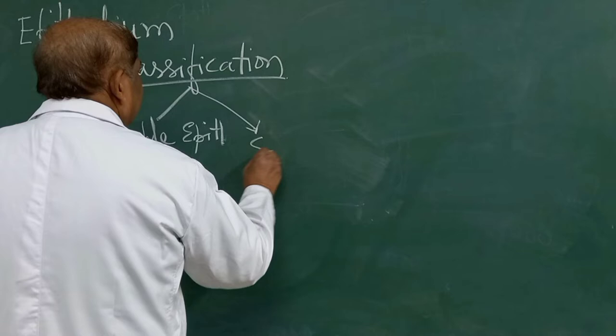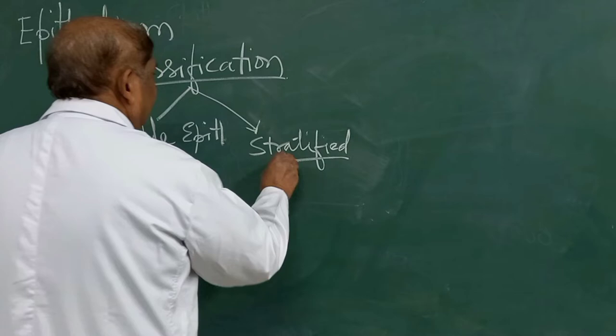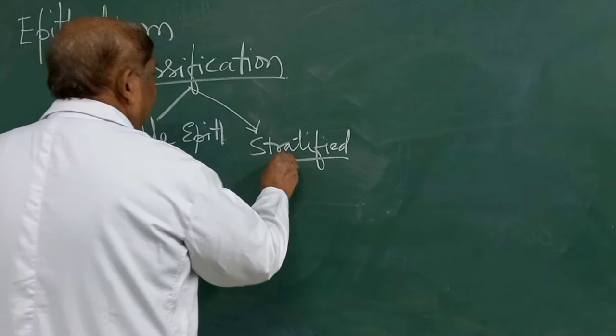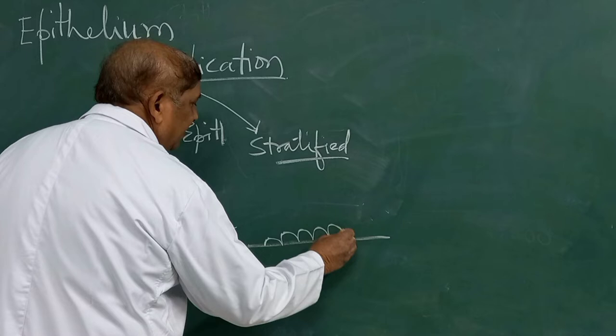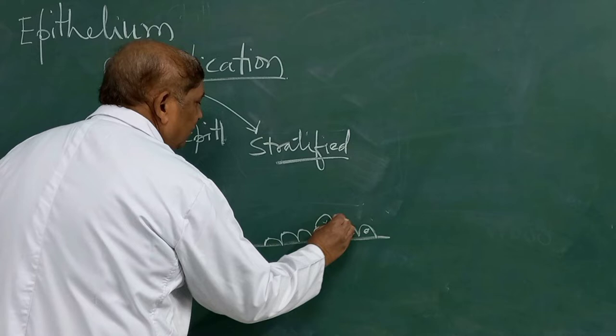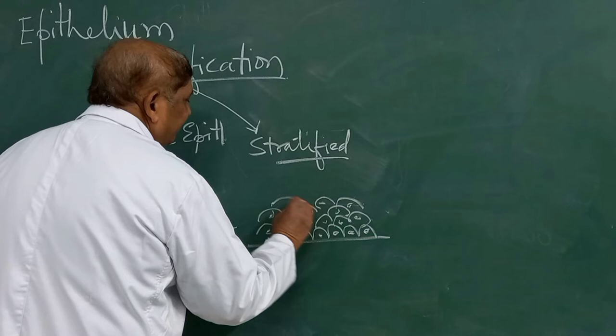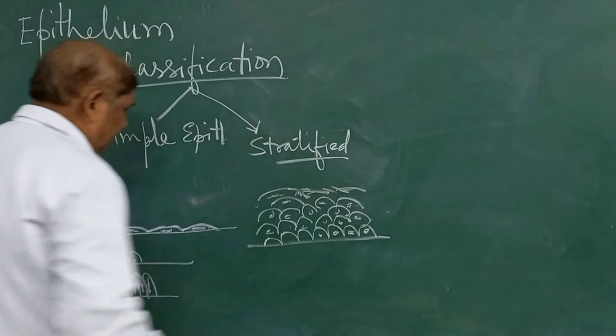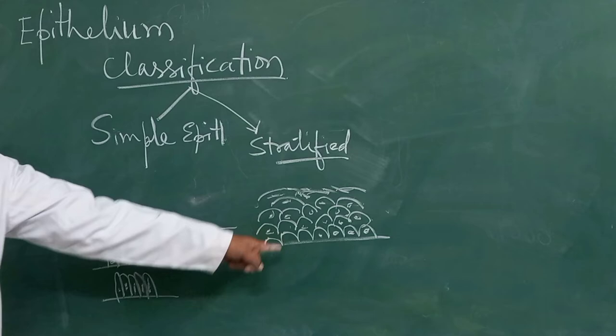The second type is classified as stratified epithelium. What do we mean by stratified epithelium? Here the epithelium is not arranged into a single layer but into multiple layers. The sheet of cells is not thin but quite thick, because many layers of cells are arranged one upon the other, giving thickness to this epithelium.